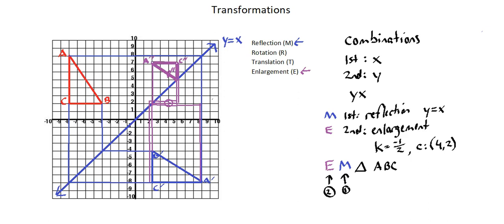This triangle is the enlargement of triangle A prime, B prime, C prime, applying a scale factor of negative one-half through center (4, 2).